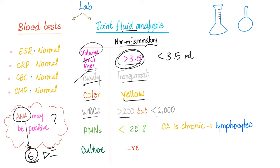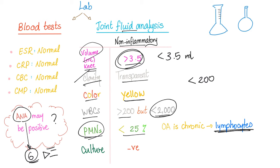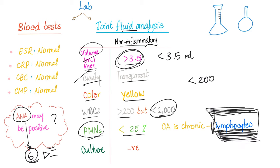White blood cells are more than 200 but less than 2,000 — recall normal is less than 200, so osteoarthritis is not normal. PMNs make up less than 25% of the total leukocyte count in the joint. Since osteoarthritis is a chronic problem, lymphocytes predominate rather than neutrophils. Culture is negative because this is not septic arthritis — there is no bacteria such as gonorrhea or Lyme disease.